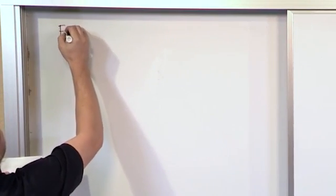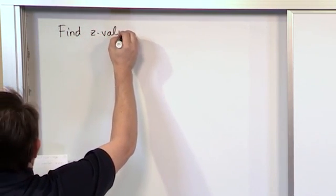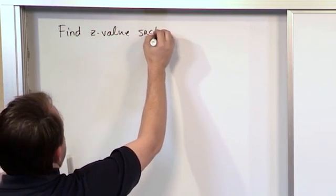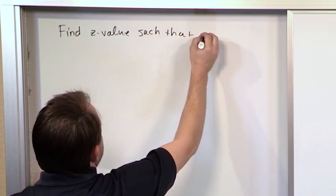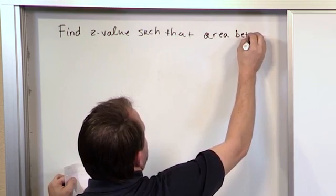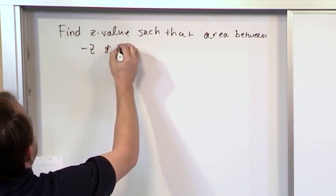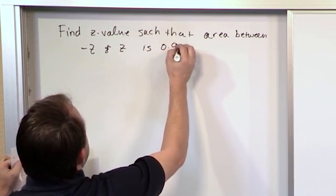So for now, just to learn mechanically how to do this, let's find the z value such that the area between negative z and z is 0.99.